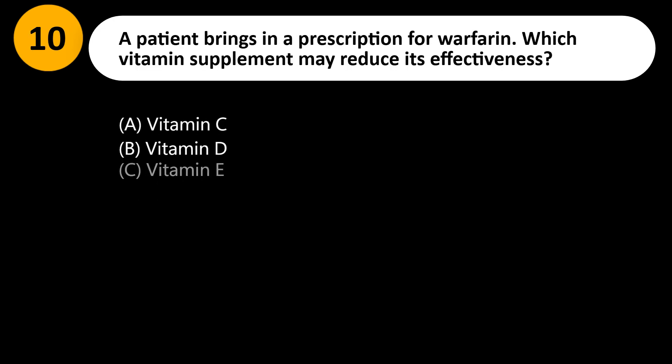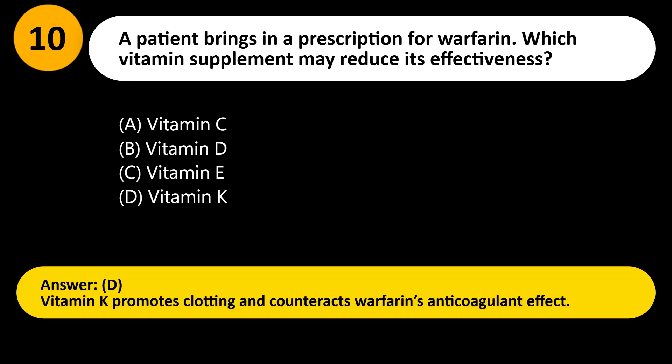A patient brings in a prescription for warfarin. Which vitamin supplement may reduce its effectiveness? A) Vitamin C, B) Vitamin D, C) Vitamin E, D) Vitamin K. Answer: D. Vitamin K promotes clotting and counteracts warfarin's anticoagulant effect.